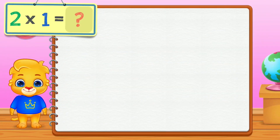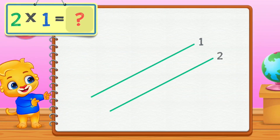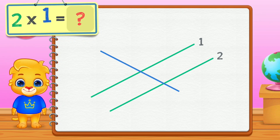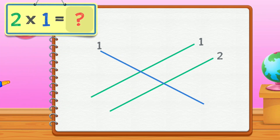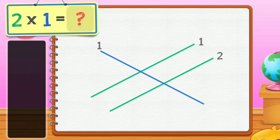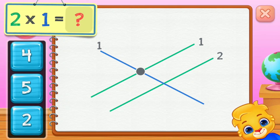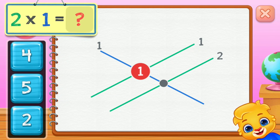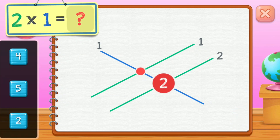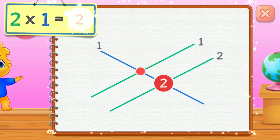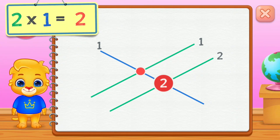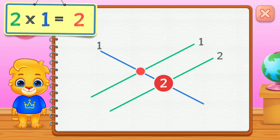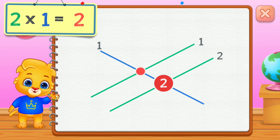Two times one equals... One, two. Two times one equals two.